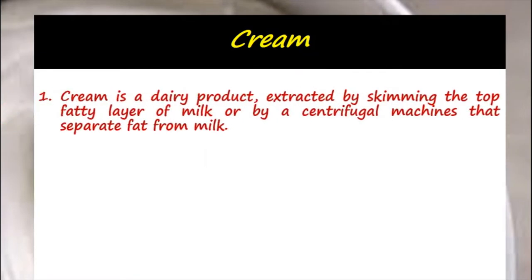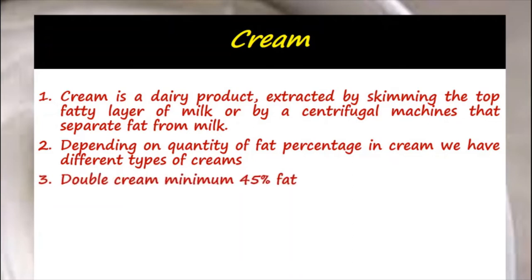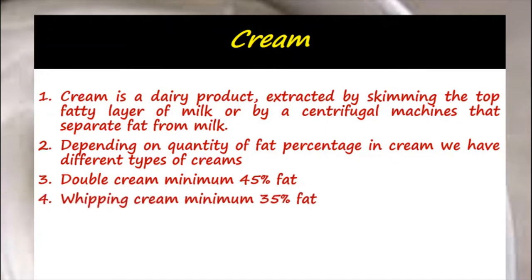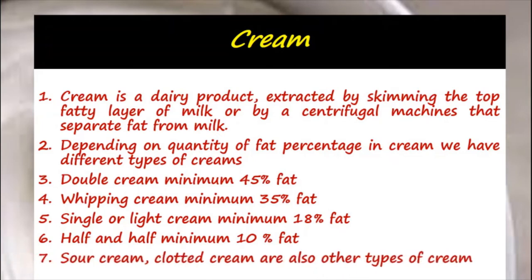Cream is a dairy product extracted by skimming the top fatty layer of milk or by a centrifugal machine that separates fat from milk. Depending on the quantity of fat present, we have different types: double cream contains minimum 45% fat, whipping cream minimum 35% fat, single or light cream minimum 18% fat, half and half minimum 10% fat. Sour cream and clotted cream are also other types of cream.